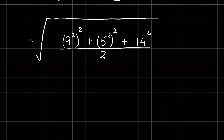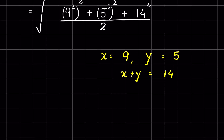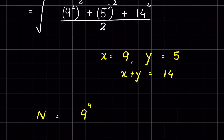Let's consider x equal to 9 and y equal to 5, so x plus y equals 14. Now let's solve the numerator. The numerator is 9 squared whole squared, which is 9 to the power 4, plus 5 to the power 4, plus 14 to the power 4.